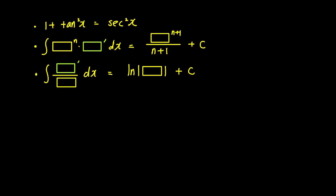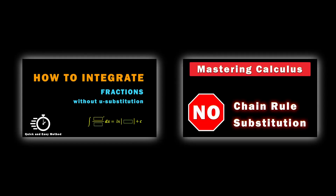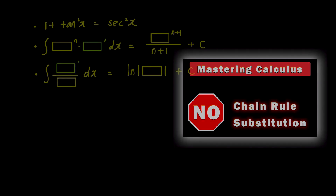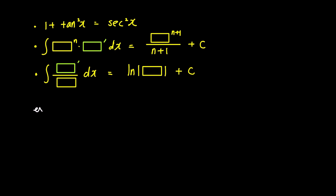If you are new to my channel, the second and third facts might seem familiar. For a more detailed explanation and examples, check the link in the top right corner. Let me briefly explain. For instance, consider the integral of (-4x² + 3)⁵ times x dx.